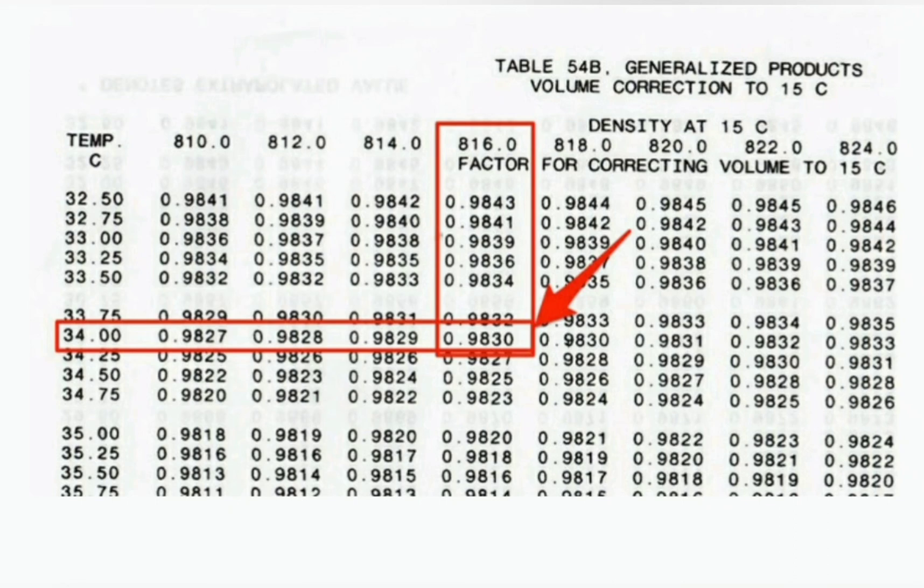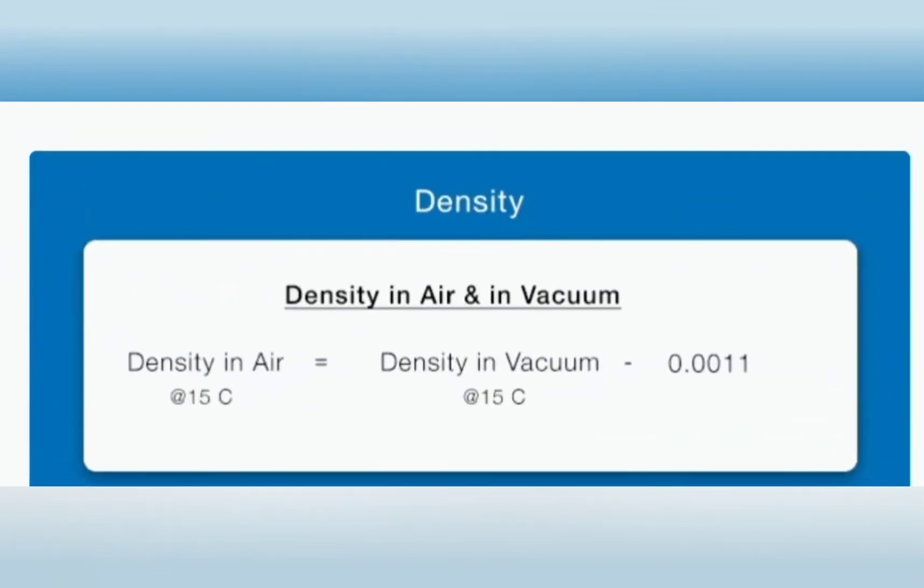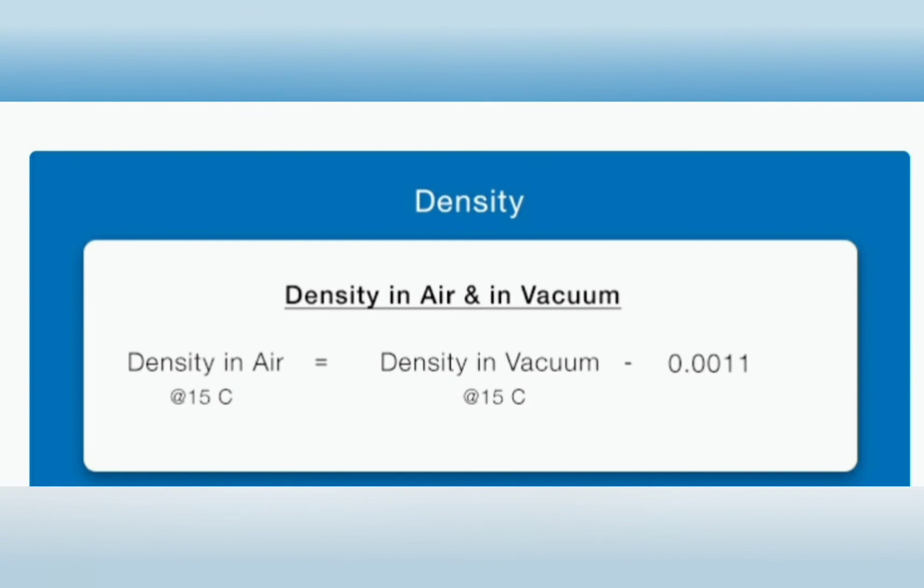So if we simply multiply this density with standard volume, we get the weight in vacuum. So we then need to either convert the weight in vacuum to weight in air as we discussed earlier, or we can simply convert the density in vacuum to density in air. There is a simple correlation between density in vacuum and density in air.